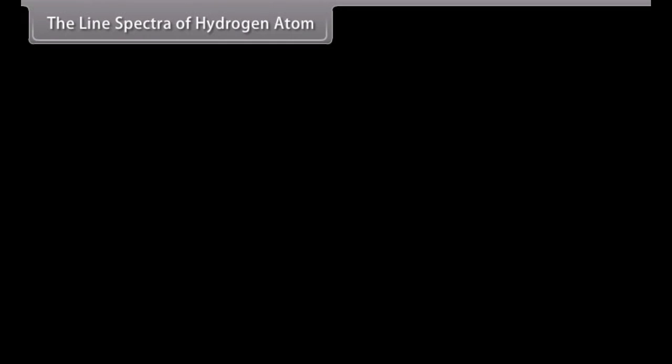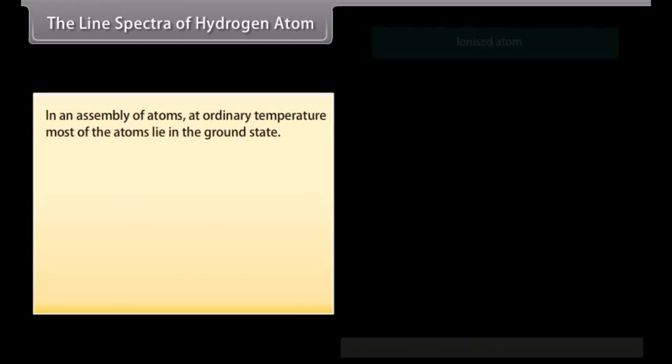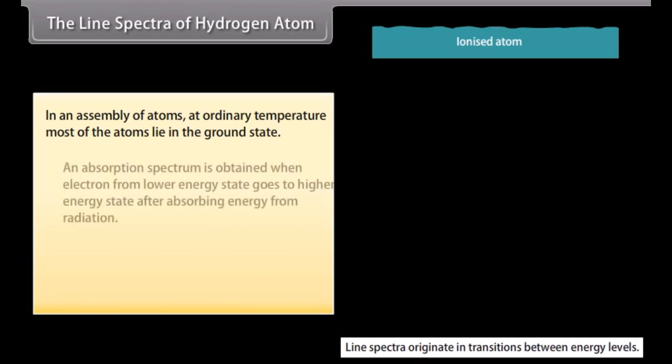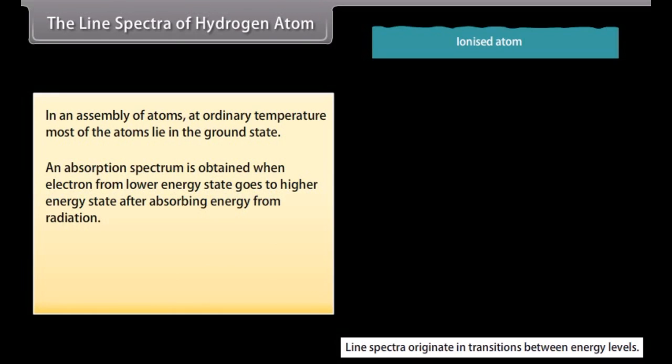The line spectra of hydrogen atom. In an assembly of atoms at ordinary temperature, most of the atoms lie in the ground state. If white light is passed through such an assembly of hydrogen atoms, the transmitted light will not have radiations of various wavelengths. It is the absorption spectrum of hydrogen corresponding to Lyman series. An absorption spectrum is obtained when electron from lower energy level absorbs radiation. The frequency of absorbed radiation is given by H nu equals E high minus E low.